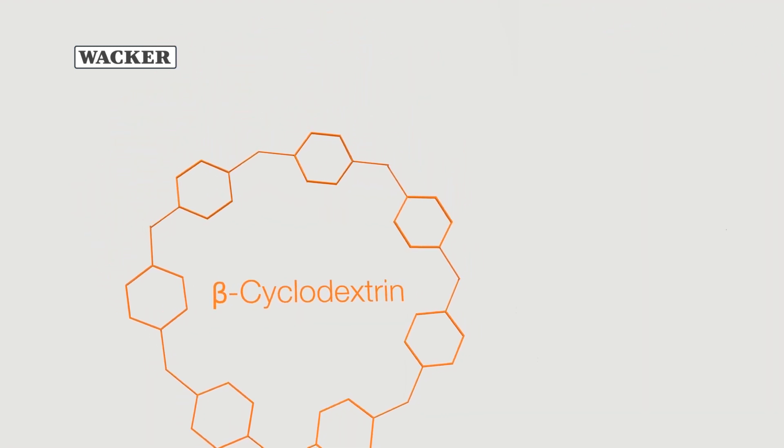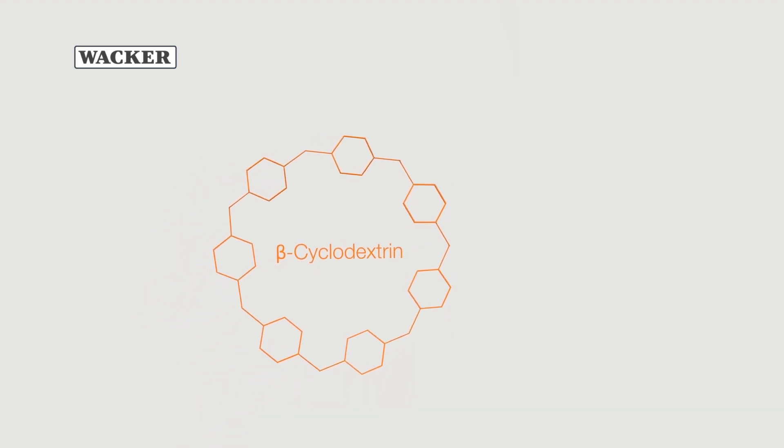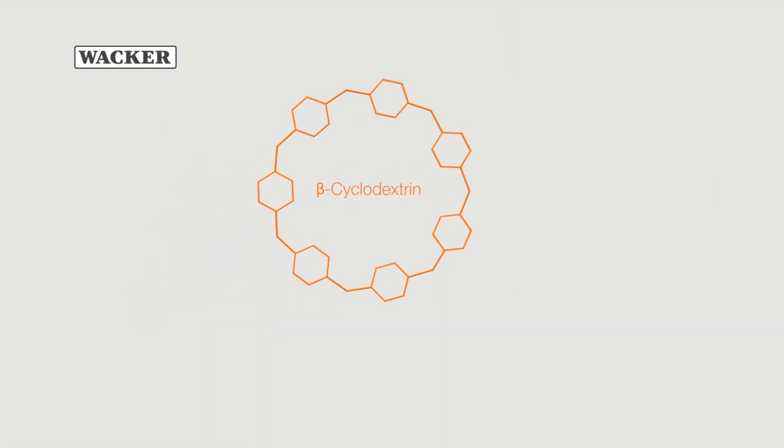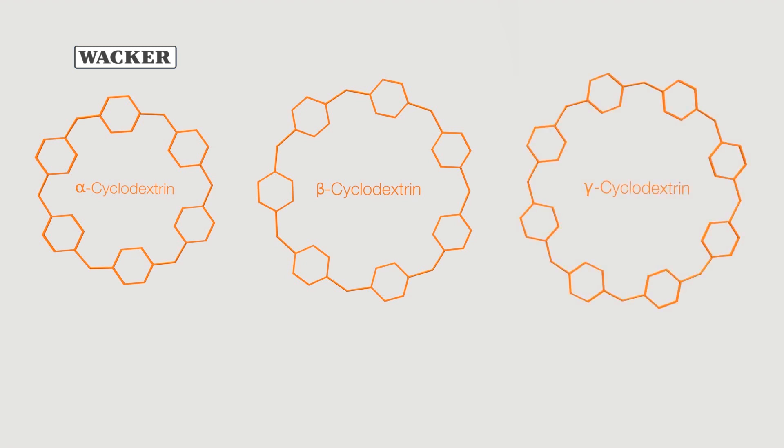With other types of enzymes, it is also possible to form two further cyclodextrins. Alpha-cyclodextrin, with six glucose units, and gamma-cyclodextrin, with eight glucose units.